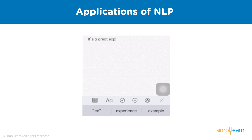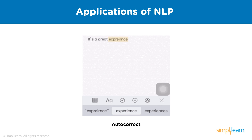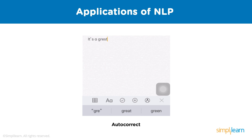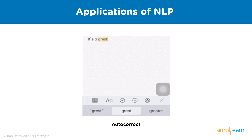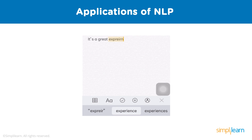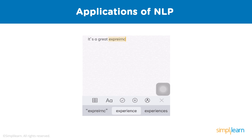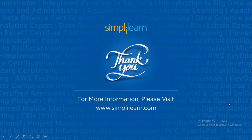Another application of NLP is auto correction, also known as text replacement or autocorrect — an automatic data validation function found in word processors and text editing interfaces for smartphones and tablets. It acts as a spell check and corrects spelling or grammar mistakes as you type. Language-checking software like Grammarly, Paper Rater, and Reverso can even check how unique and engaging your articles are — all using NLP.